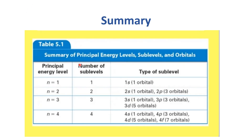Here is the relation between the principal quantum number and the orbitals. If the principal energy level is 1, the number of sub-levels would be 1 and it would be 1s. The 1s orbital is spherical in shape. If n equals 2, sub-levels would be 2: 2s and 2p. The 2p is further divided into 3 orbitals — px, py, and pz.